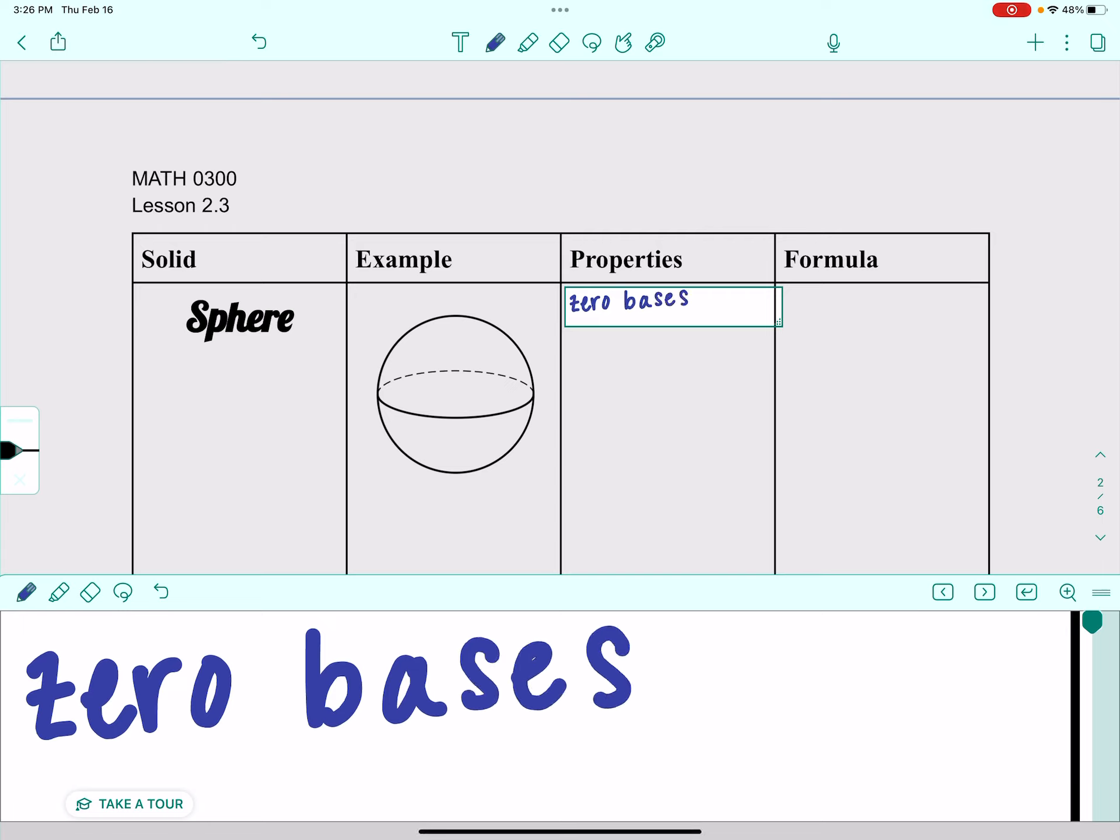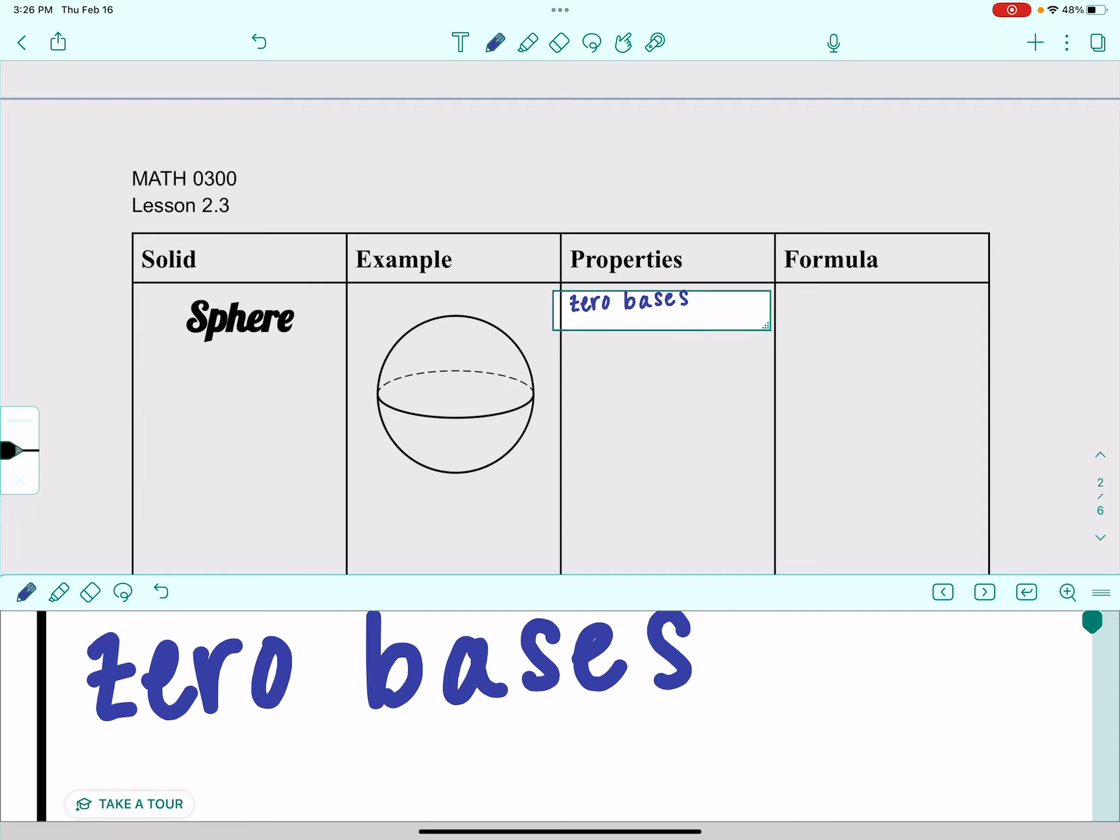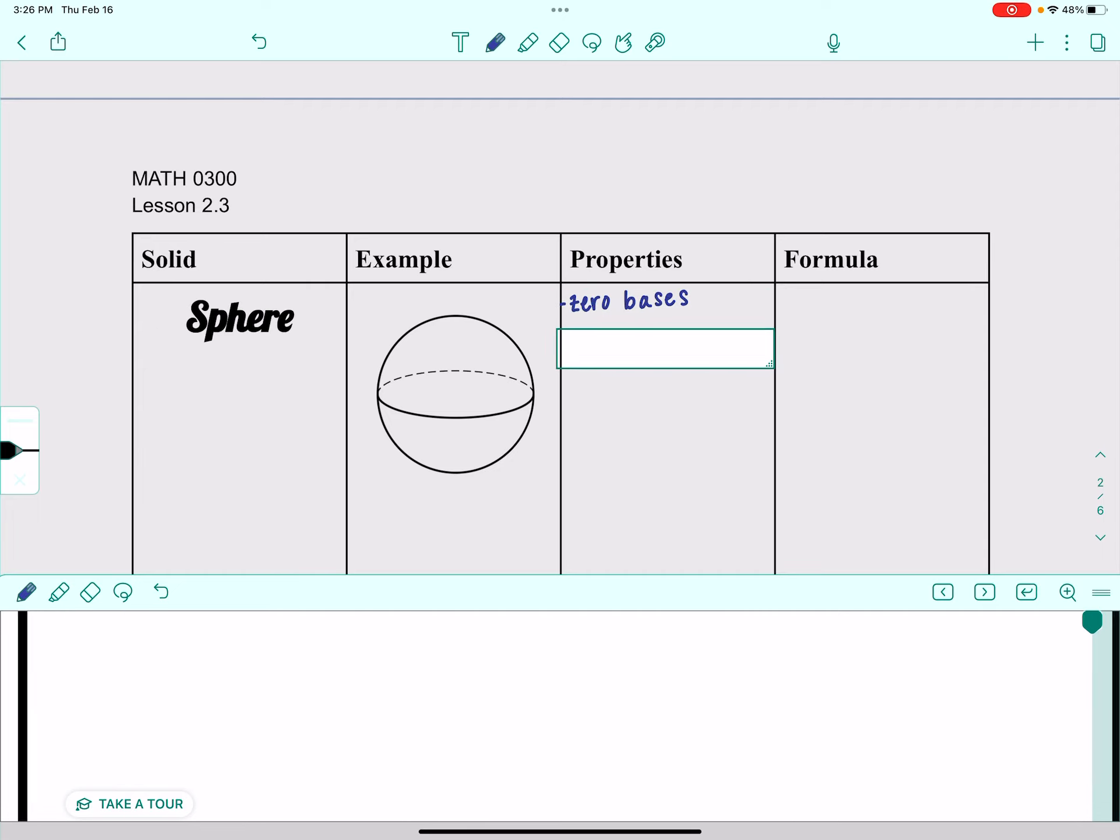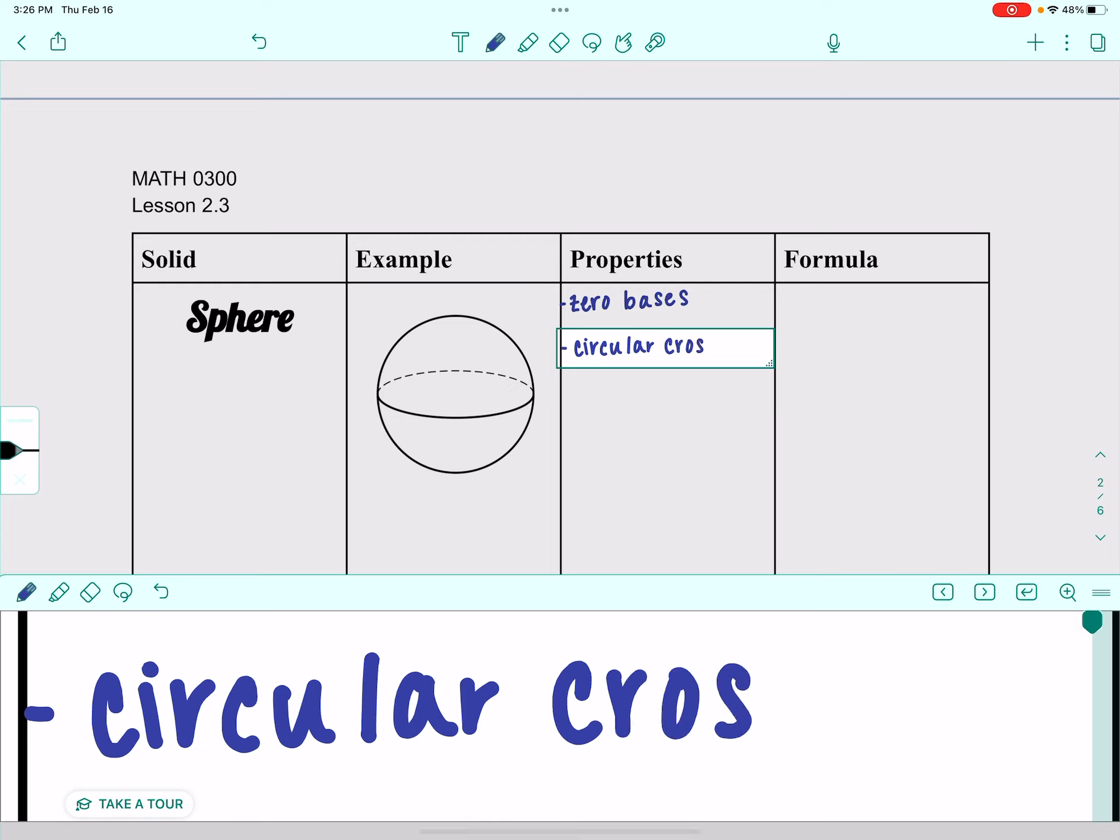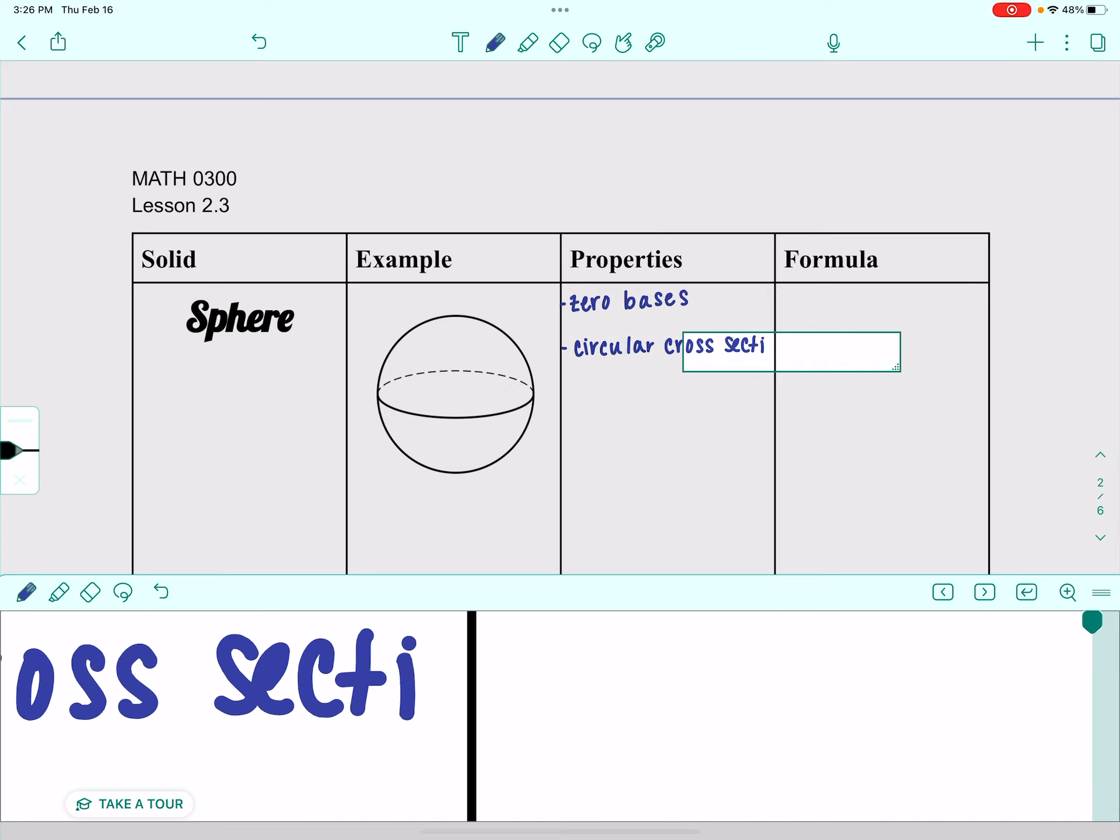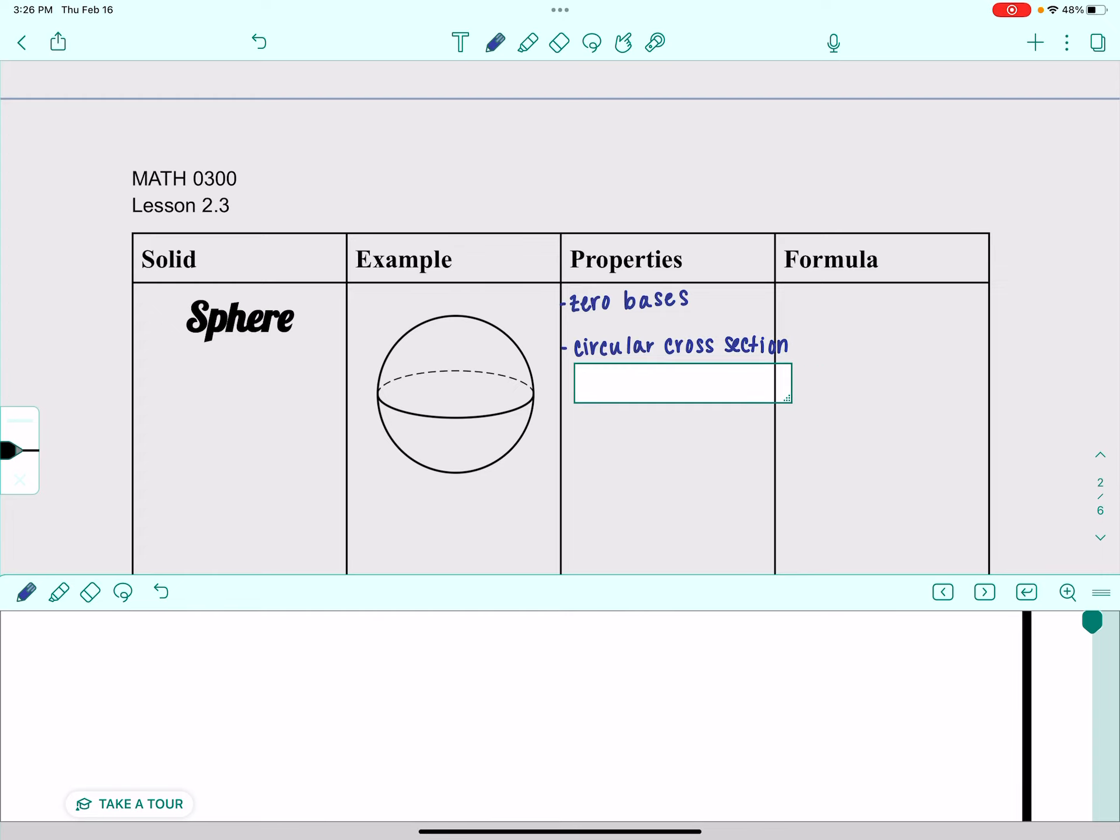What it does have is a circular cross-section passing through its center.